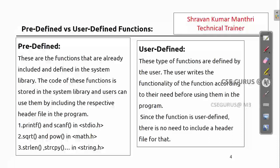Predefined functions are functions which are already defined in the compiler. For example, when we write a C program we use printf and scanf — these are functions. Printf prints something inside double quotes. The compiler knows these because they are already defined in a header file.